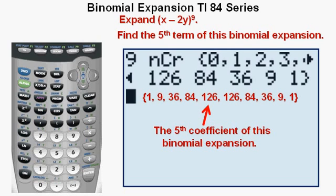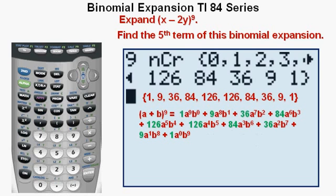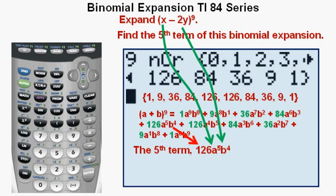The next thing we'll do is bring out the expanded form as we did at the beginning using A and B. Our 5th term is this one, 126A to the 5th power B to the 4th power. Now we'll substitute X for A and negative 2Y for B as shown by the green arrows.